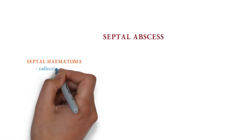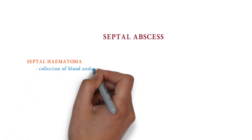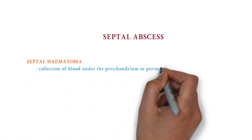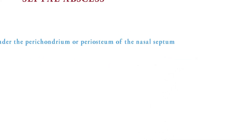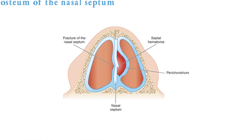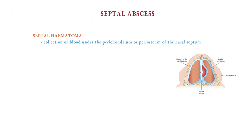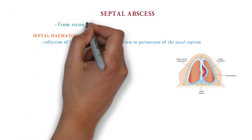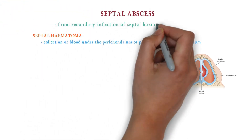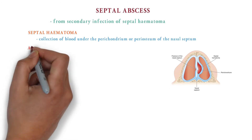Septal hematoma is a collection of blood under the perichondrium or periosteum of the nasal septum. Septal abscess is formed after secondary infection of septal hematoma.